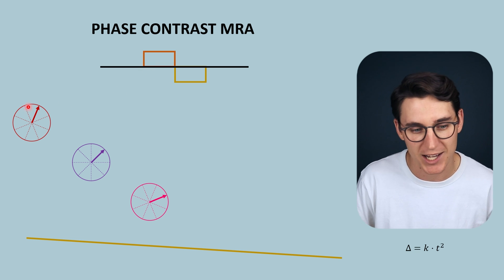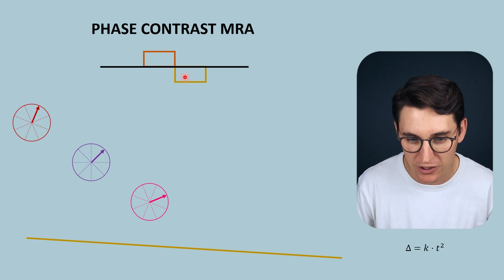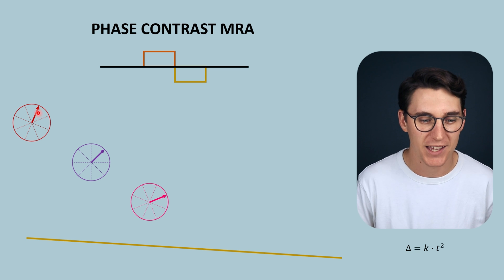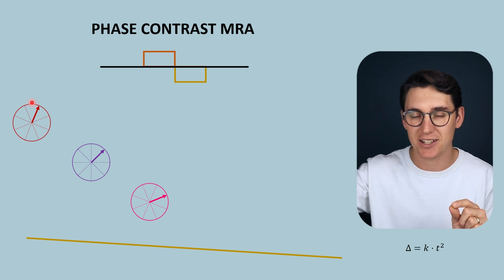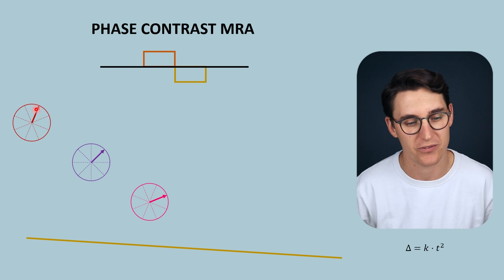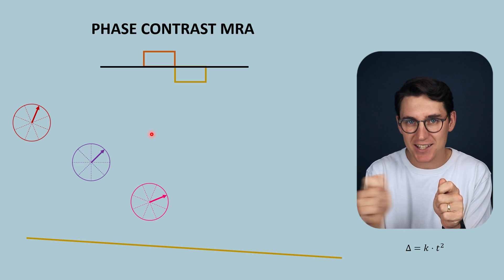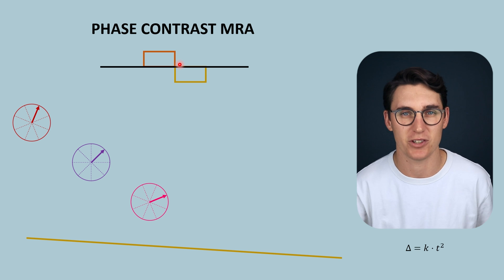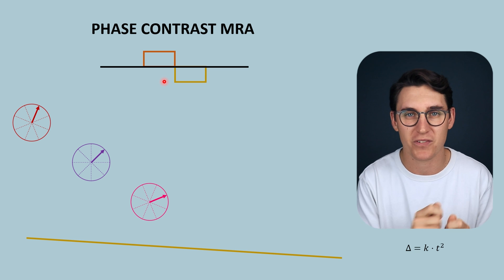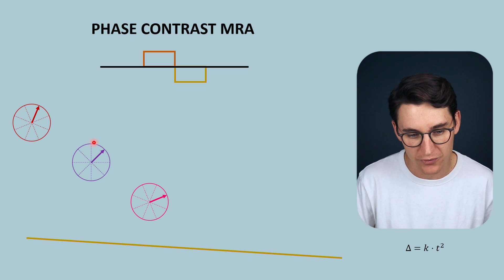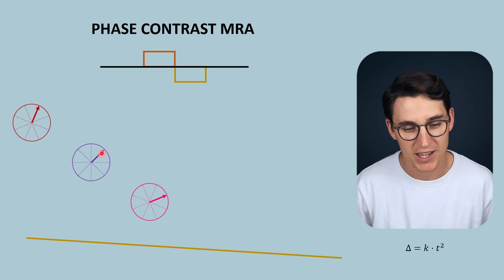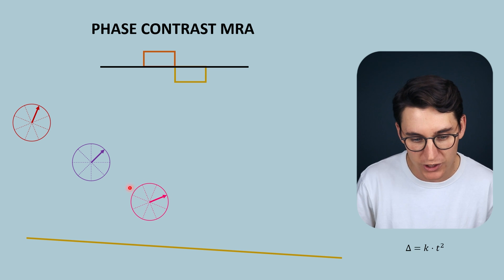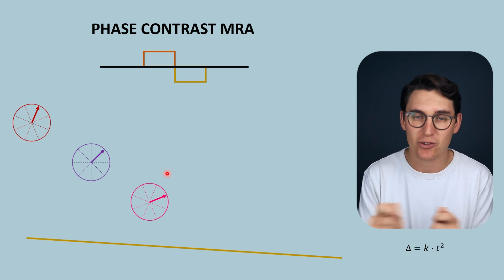For the stationary spin, it gains one unit of phase in the first period, and with the equal and opposite gradient, it regains one unit — a linear fashion, gaining or losing one unit per period. For moving spins, in the second period with the gradient, we gain three units of phase change (one unit, then three units, then five units). This spin gained one unit in the positive direction moving along the positive gradient, then loses three units moving along the negative gradient. The same happens with the faster spin, but those three units are larger due to the increased velocity.